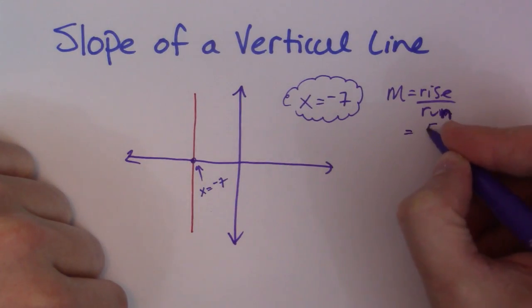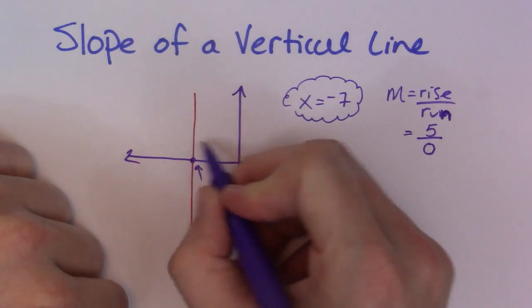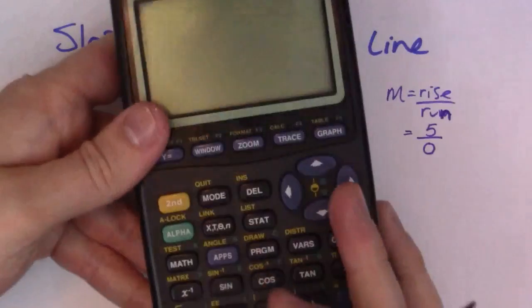So my rise might be 5. And my run, well it doesn't run at all because it doesn't go left or right, so it's 0. So if I put that on my calculator,